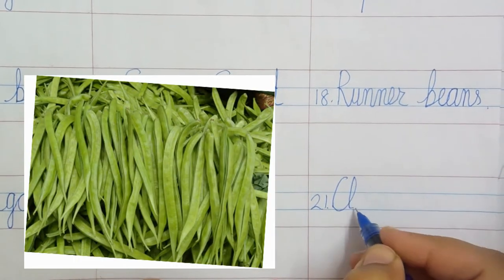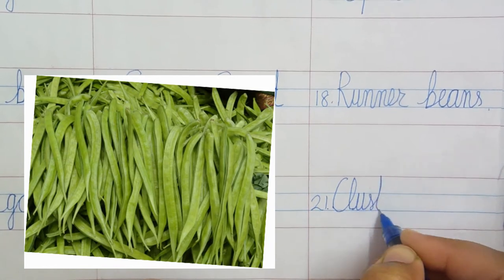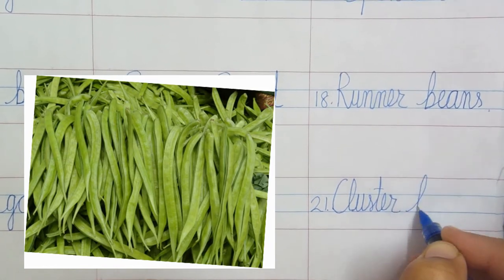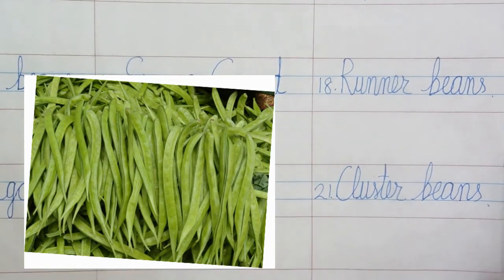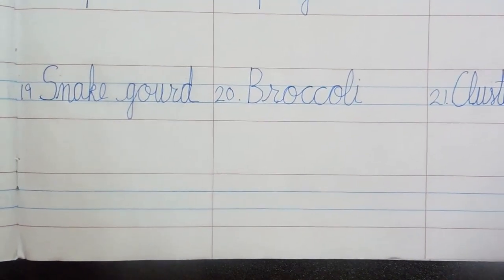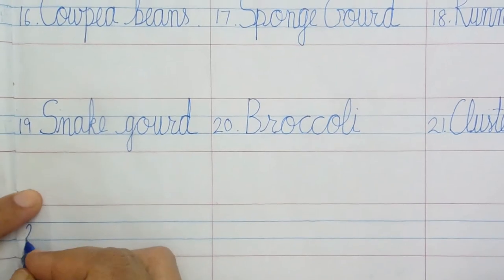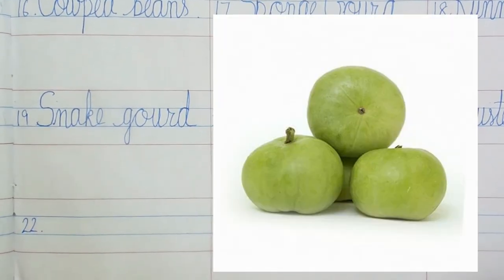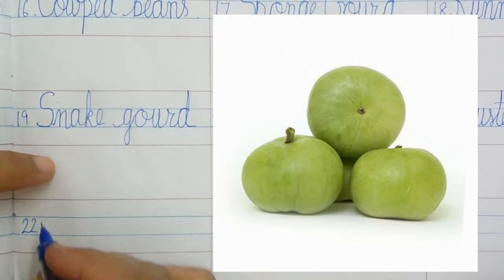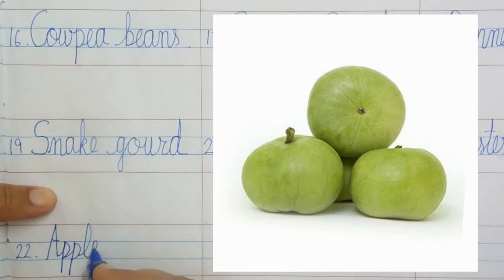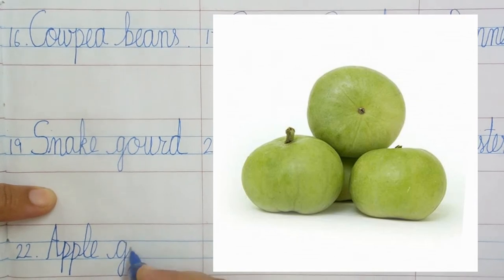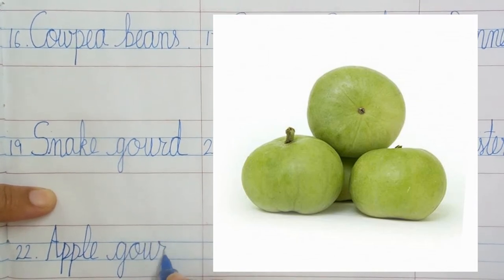Cluster beans: C-L-U-S-T-E-R B-E-A-N-S, cluster beans. Apple gourd: A-double P-L-E G-O-U-R-D, apple gourd.